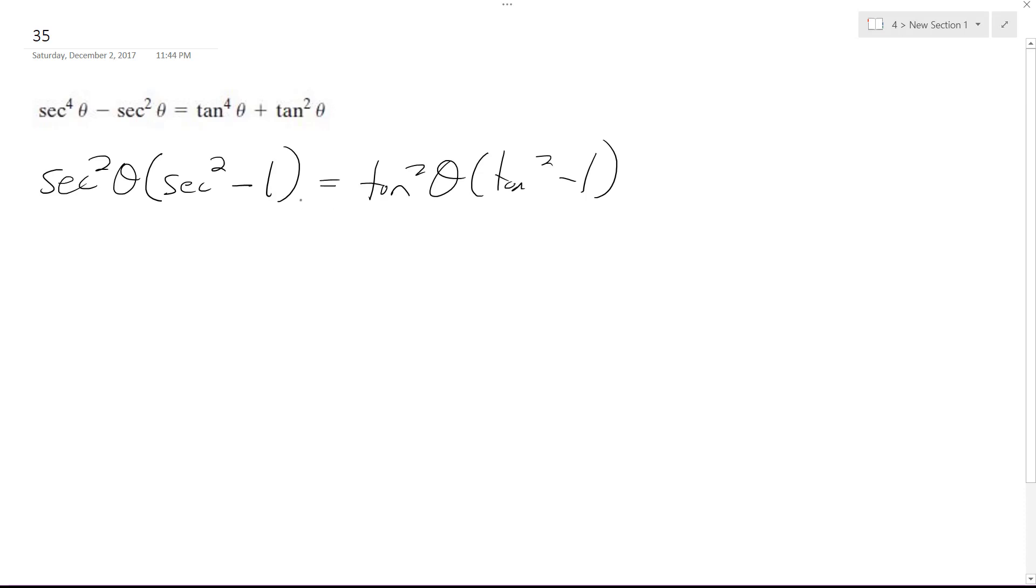All right, so secant squared theta, you can think of this as one over cosine squared theta minus one. If you get common denominators, you get one minus cosine squared theta over cosine squared theta.